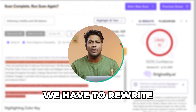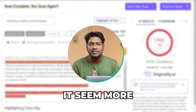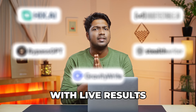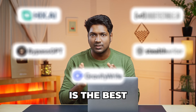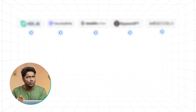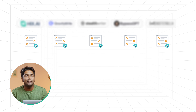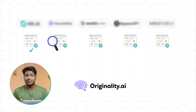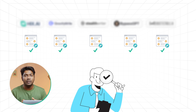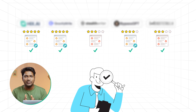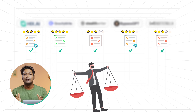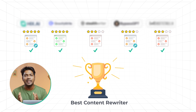Now to fix this, we have to rewrite the AI content to make it seem more human-like. So as I said earlier, we will test these five AI tools with live results and see which one is the best. We will take the content and put it into these five different tools to rewrite it, then test that to see if it passes the AI detection test. We will also test the quality of the content, and at the end we will compare all the results to see which tool is the best for rewriting AI-generated content.